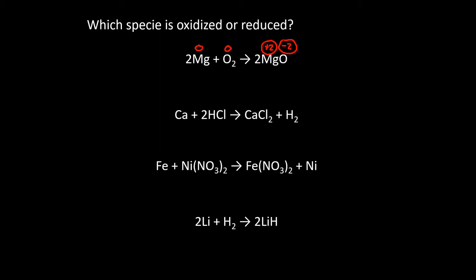All the oxygens we've seen up to this point have been negative two, or zero if they're just in O2. Given these two values, the magnesium goes from zero to plus two — that is an increase in the oxidation number, so it is oxidized. The oxygen goes from zero to minus two, so it is reduced.